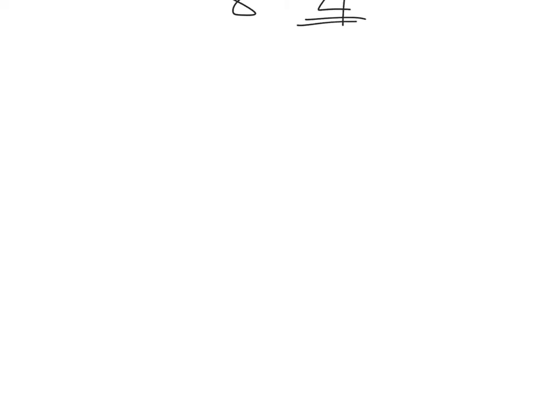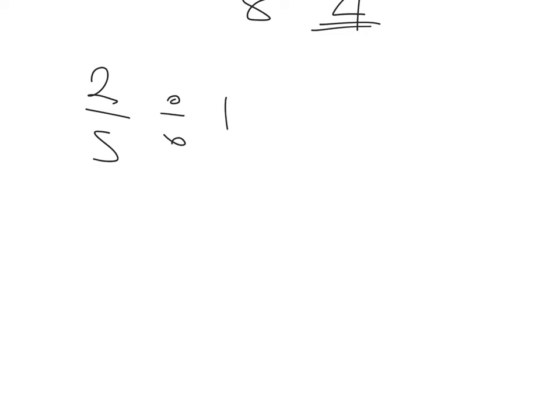Question 3: we've got 2 and a fifth divided by 1 and a third. For multiplication and division it's something different — we change the divide to a multiply and flip the second fraction over. So 2 and a fifth: let's first keep the divide and work out what fraction 1 and a third is.